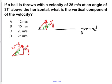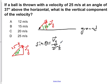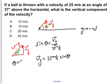Now to solve for Vy, we're going to use SOH-CAH-TOA. We find that the easiest one to use is the sine of theta, which is equal to the opposite — which is Vy — over the hypotenuse, which is the 25 meters per second, as we're given. So now if we switch this around to solve for Vy, we get Vy is equal to 25 meters per second times the sine of theta. We know that theta, the angle, is equal to 37 degrees.